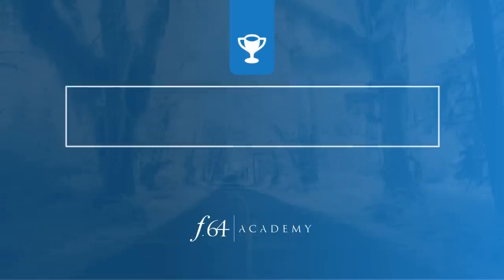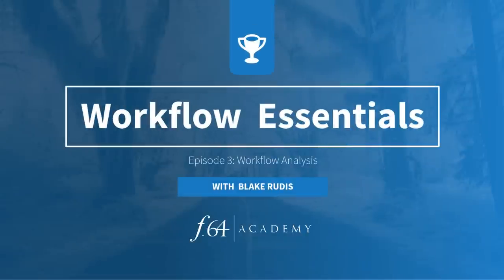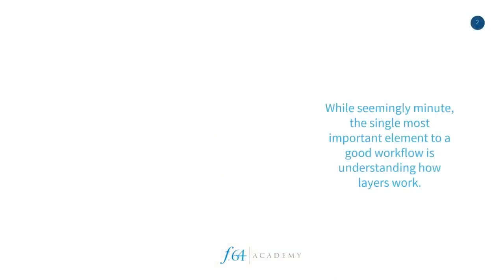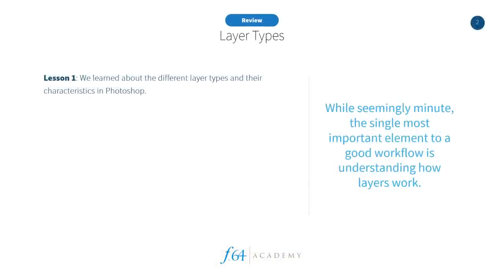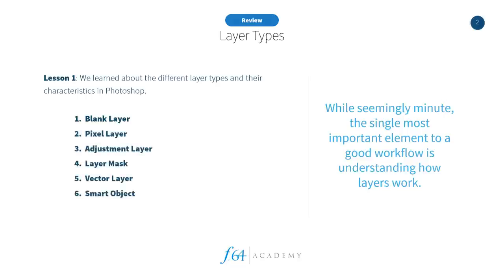In this third lesson of Workflow Essentials, we're gonna analyze a final, complete image. Before we get into the workflow analysis, let's do a recap. We talked about the different layer types: the blank layer, the pixel layer, the adjustment layer, the layer mask, the vector layer, the smart object, and also layer groups — which doesn't seem like an actual layer type, but it is. These things might seem minuscule, but they're very important. When you know what all the layer types are, you'll know which one to use in your workflow.